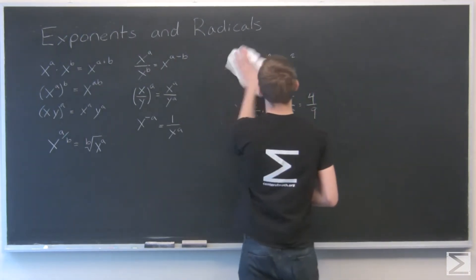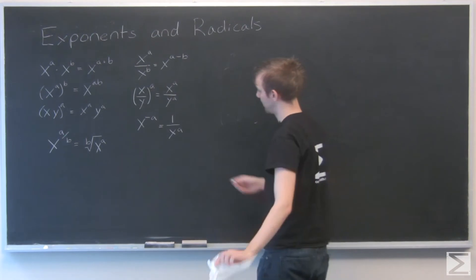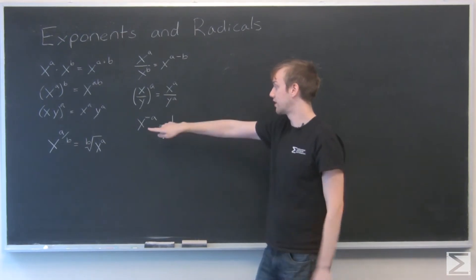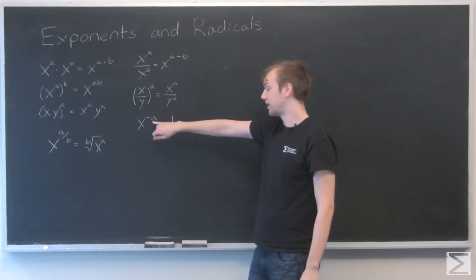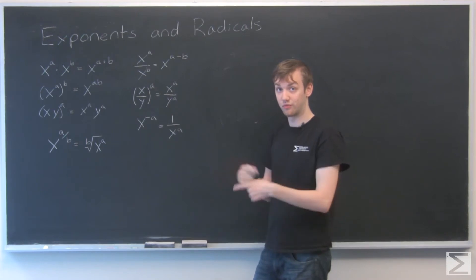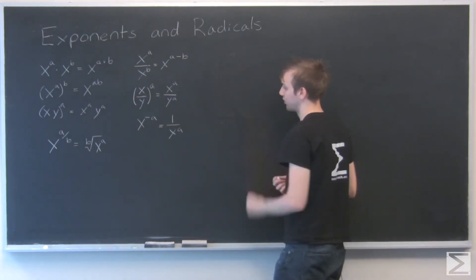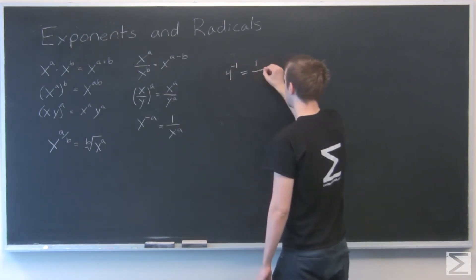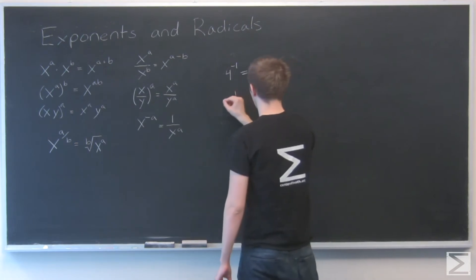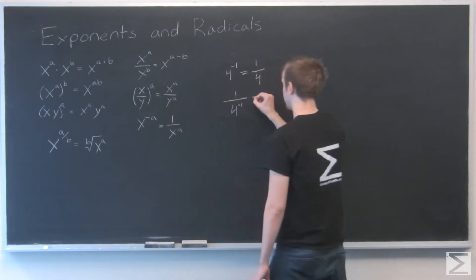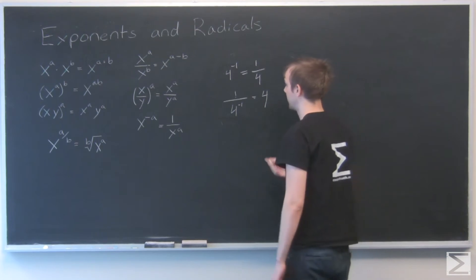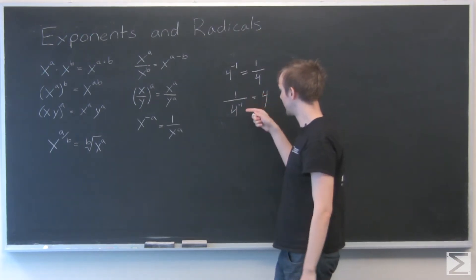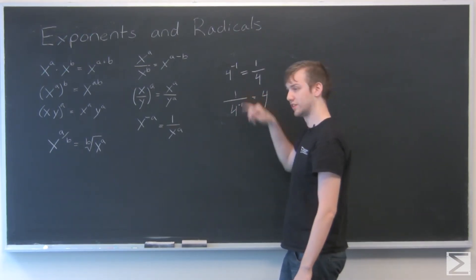Finally, x to the minus a equals 1 over x to the a. If you have an exponent with a negative sign, you just flip which side of the fraction it's on. So 4 to the minus 1 equals one fourth, and 1 over 4 to the minus 1 equals 4. Whatever side of the fraction a negative exponent is on, you just move it to the other side.